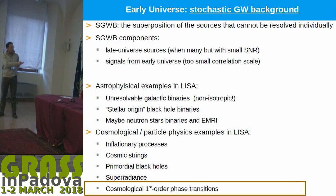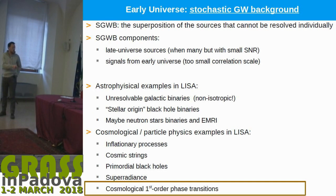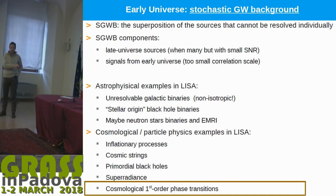We will also have neutron stars and extreme mass ratio inspirals constituting a stochastic background. Moreover, potential sources include inflationary processes, cosmic strings.